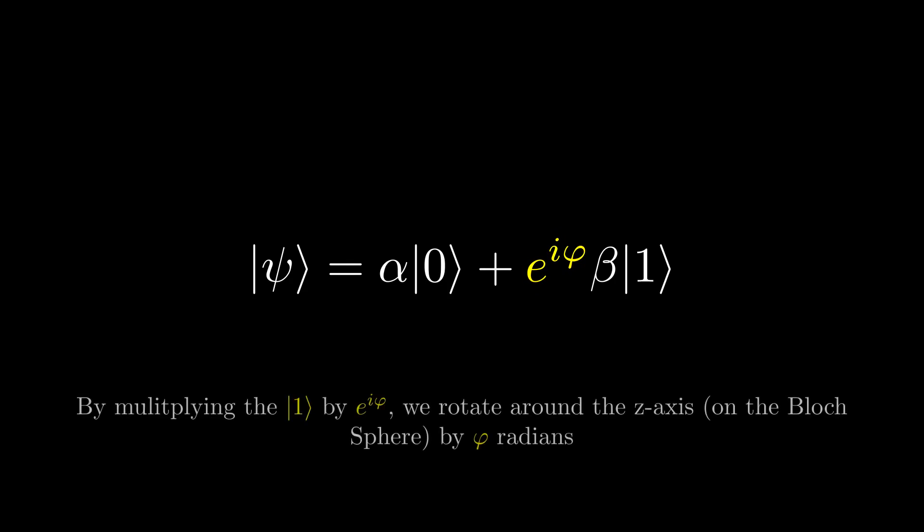We use complex numbers in exponential form in quantum computing since it gives us a nice mathematical way of rotating around a circle by changing the value of φ. By multiplying the |1⟩ state of the qubit with the complex number e^(iφ), we rotate the qubit around the z-axis by φ radians. But why is it the |1⟩ state and not the |0⟩ state being multiplied by the complex number?